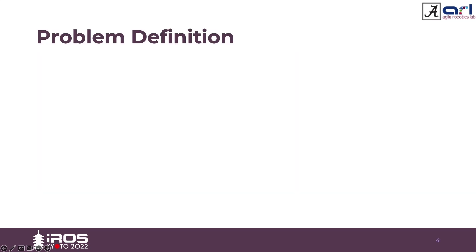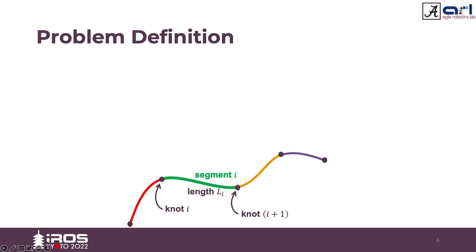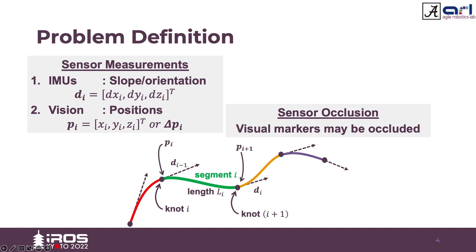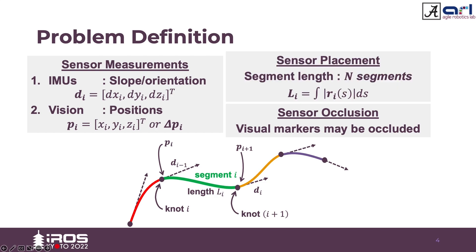The entire soft manipulator can be represented using a curve, where each curve segment is represented by a different color. The filled circles are called knots, where the sensors are placed. Two types of sensors were used: IMUs, which give orientation at the knots, and vision, which gives position at the knots. There also exists a case where visual markers may be occluded. For n segments, there exist n plus 1 sensors placed at predefined length intervals, and this length can be taken as a constraint.